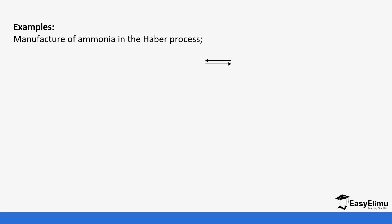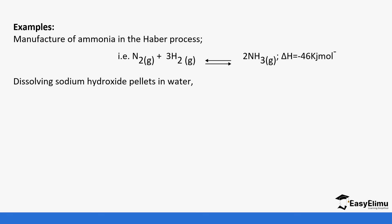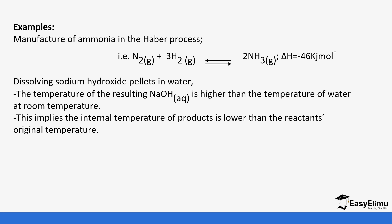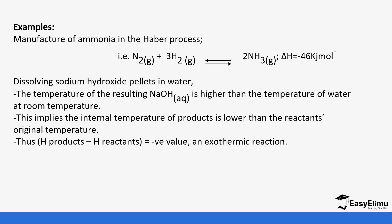Examples of exothermic reactions include the Haber process — when nitrogen and hydrogen react they give off a lot of heat. Another example is the dissolving of sodium hydroxide in water: when you touch the beaker containing sodium hydroxide you notice it is very hot, because that reaction causes a lot of release of heat into the environment, which is why there is an increase in temperature when you measure the solution. Exothermic reaction values are always negative.